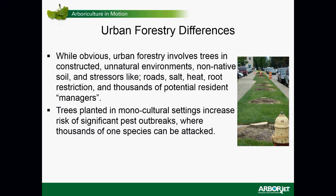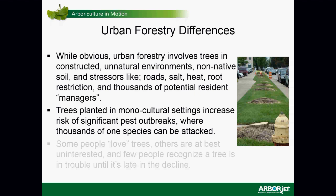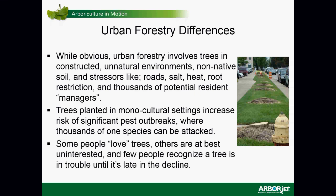The trees are planted in monoculture settings, which increase the risk of significant pest outbreaks. You can't help but wonder if we didn't plant ash trees everywhere in the Midwest after the elms died, whether emerald ash borer would have had the ability to spread so rapidly. Thousands of one species can be attacked very simply by moving from tree to tree. The picture shown here is actually in Michigan — this is the reality in the early years of emerald ash borer there. Some people love trees, others are at best uninterested, and few people recognize that a tree is in trouble until it's late in the decline. They wake up one morning, the tree doesn't look good, and they call, probably you.